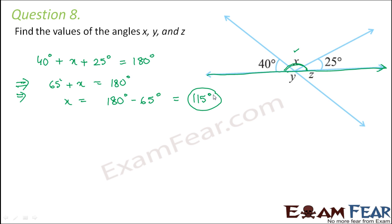x is equal to 115 degrees — that is the value of x. Now z is pretty simple to find because z and 40 degrees are vertically opposite angles: this line and this line are two intersecting lines, this is the point of intersection, and z and 40 degrees lie exactly opposite to each other. Therefore z is equal to 40 degrees.